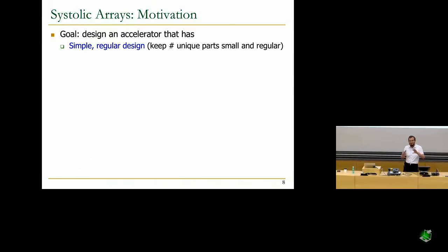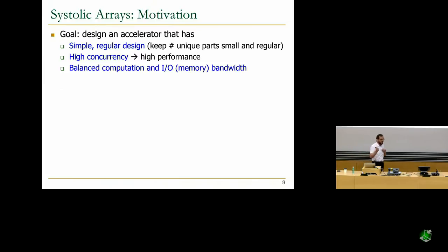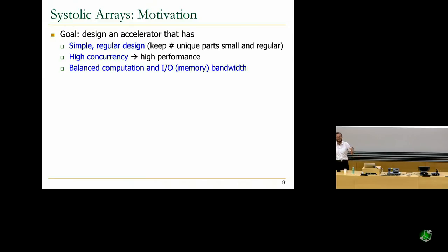The goal of a systolic array, when it was first designed, was to design an accelerator with several properties: simple, regular design — like GPUs in a sense — keeping the number of unique parts small and regular. High concurrency, so you can achieve high performance and high parallelism. And most importantly, balanced computation and I/O memory bandwidth. Memory bandwidth was important at that time; it's still important. And as you've seen in SIMD machines, it's extremely important, especially if you want high concurrency. Whenever you want to design a machine that operates on a lot of data, you're almost always limited by the memory bandwidth.